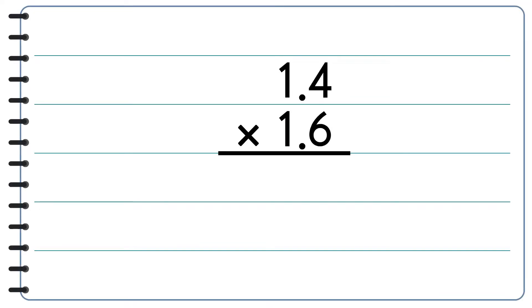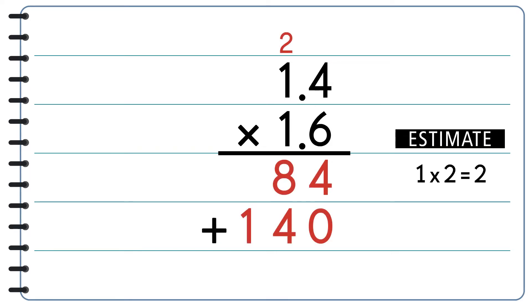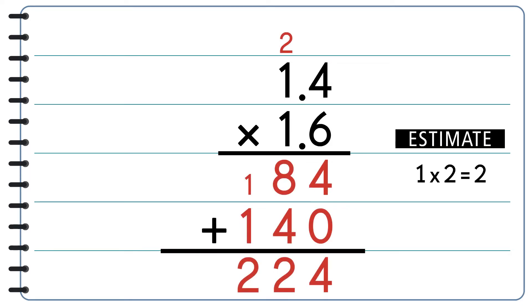Let's try some examples. 1.4 times 1.6. Let's solve using the first method, estimation. We can estimate this as 1 times 2, which equals 2. So our final answer should be around 2. We multiply as whole numbers and we get 224. Now we have to put the decimal point. The final answer should be around 2, so we put the decimal point right after the 2.